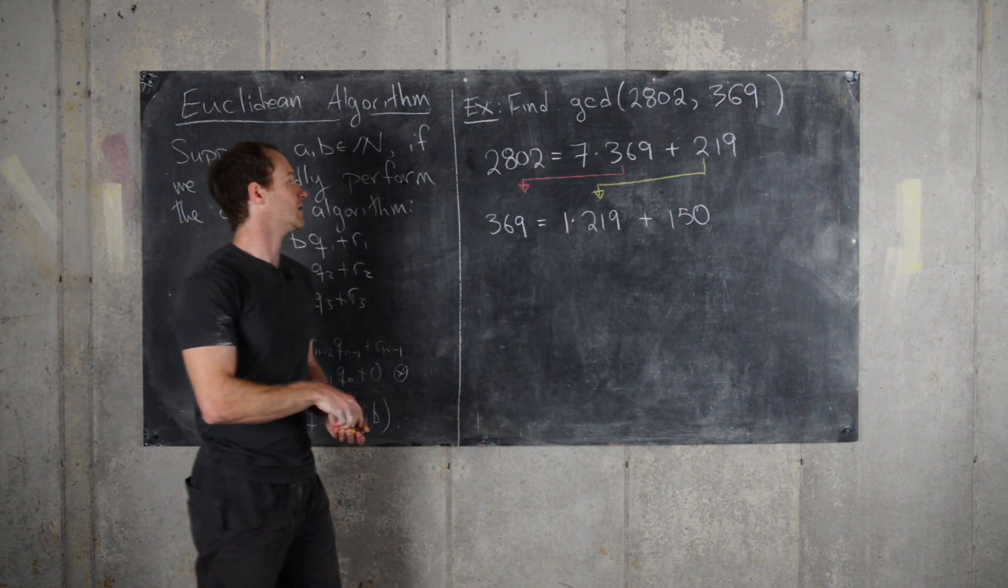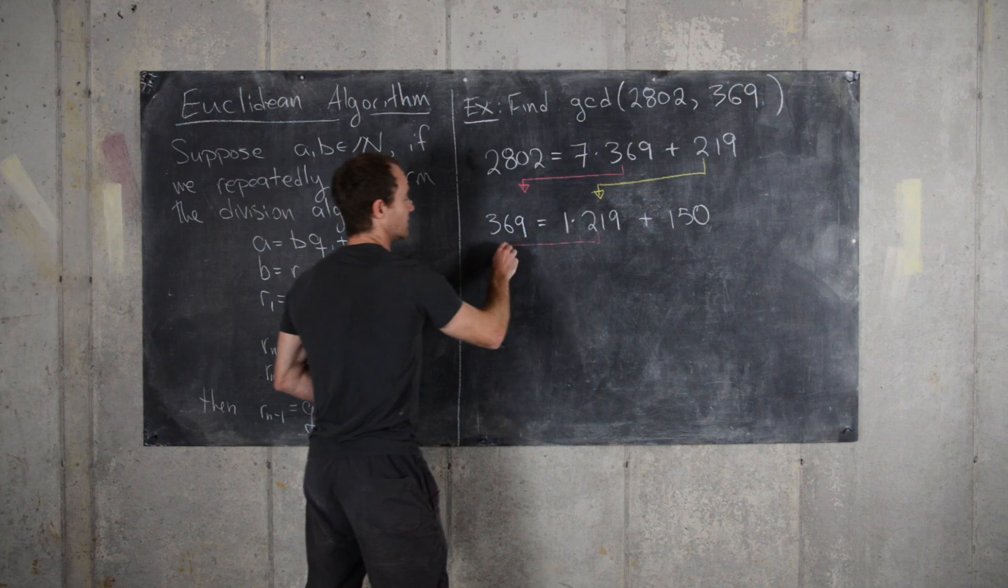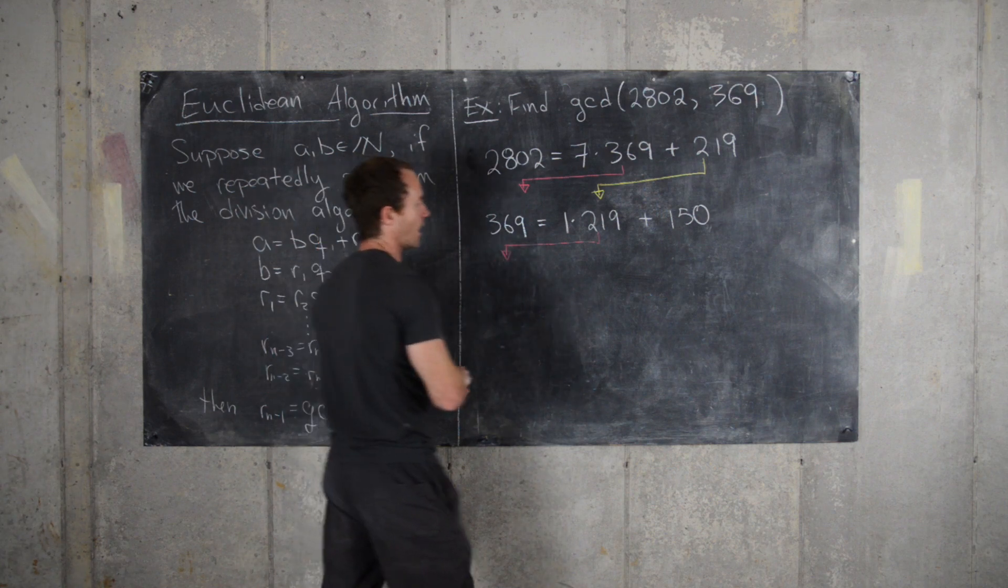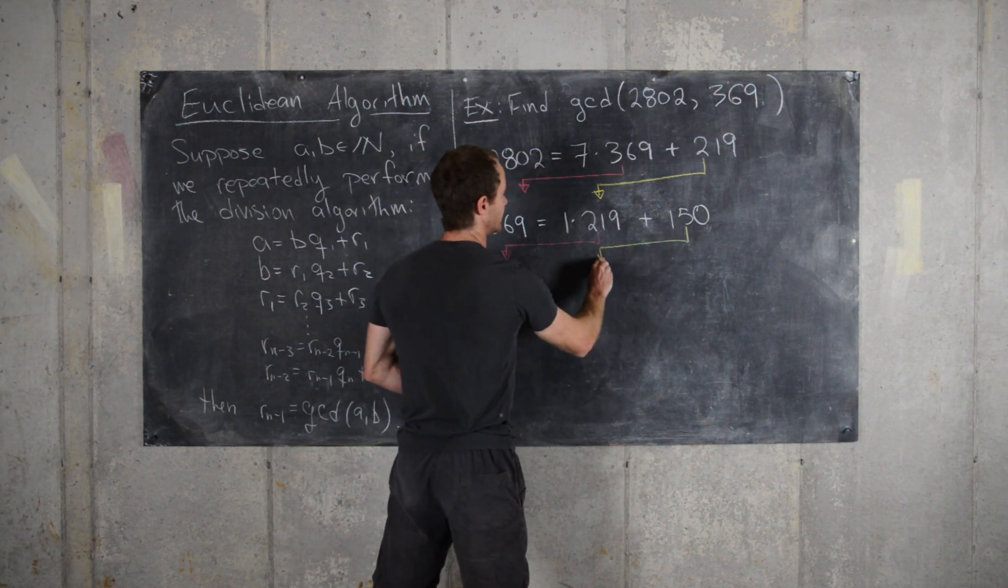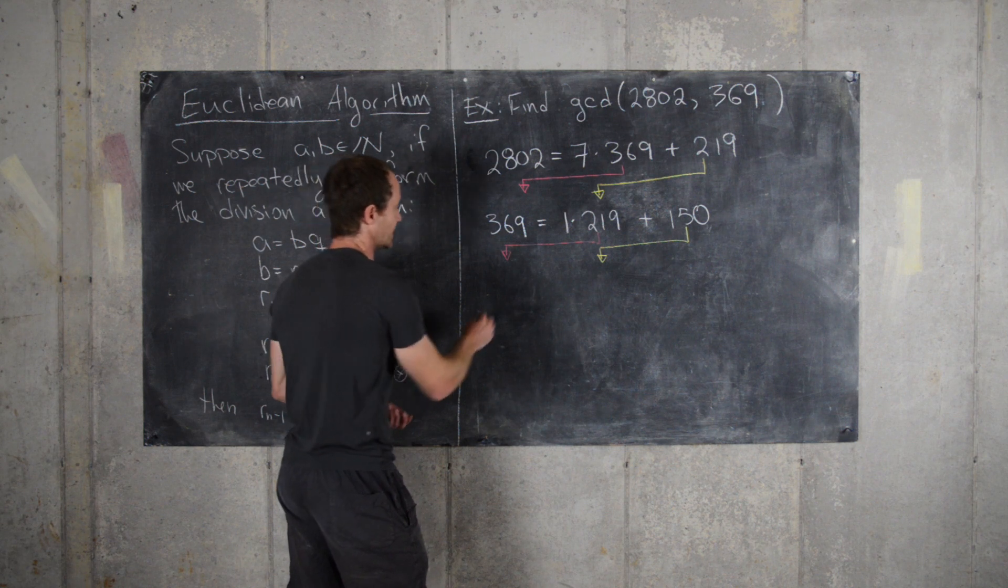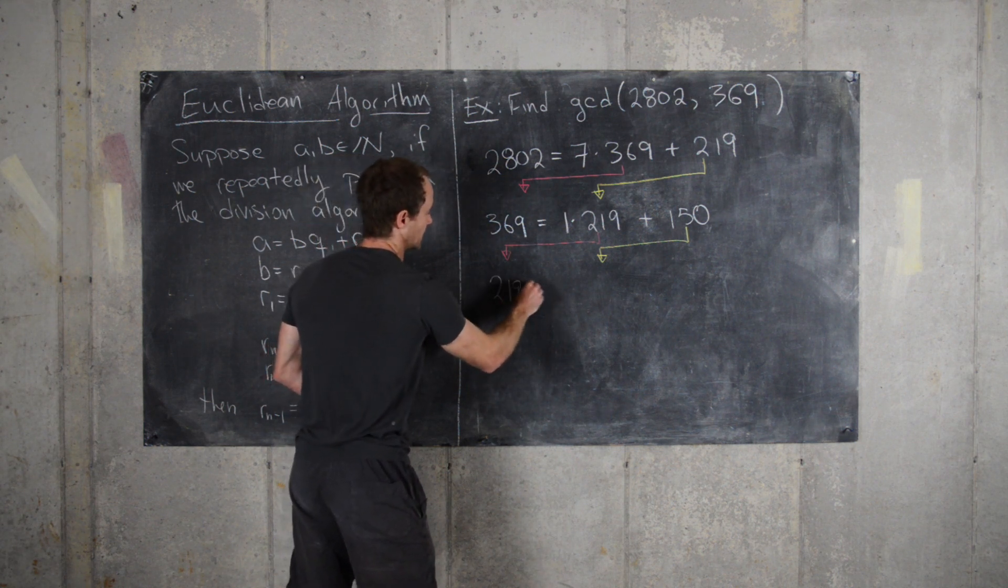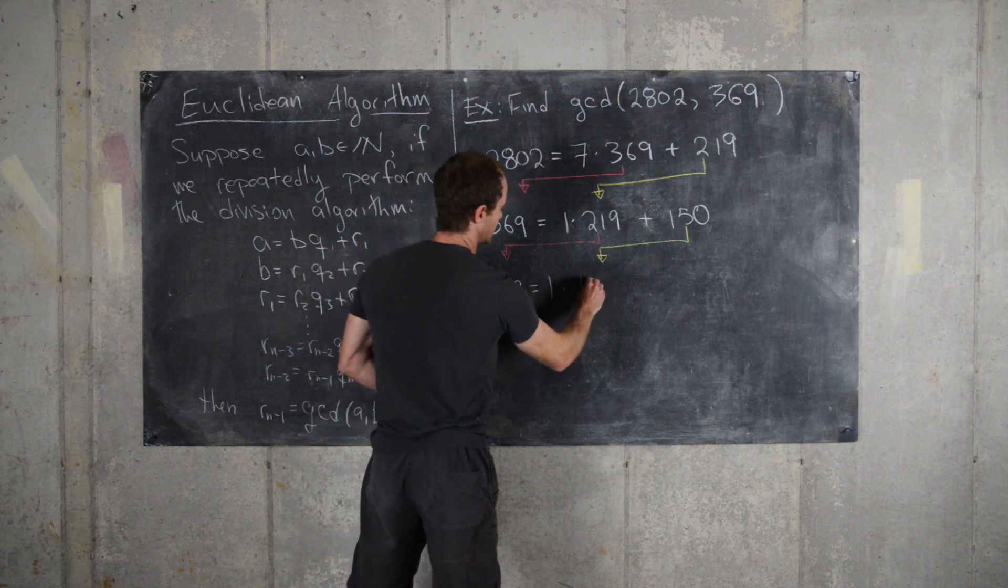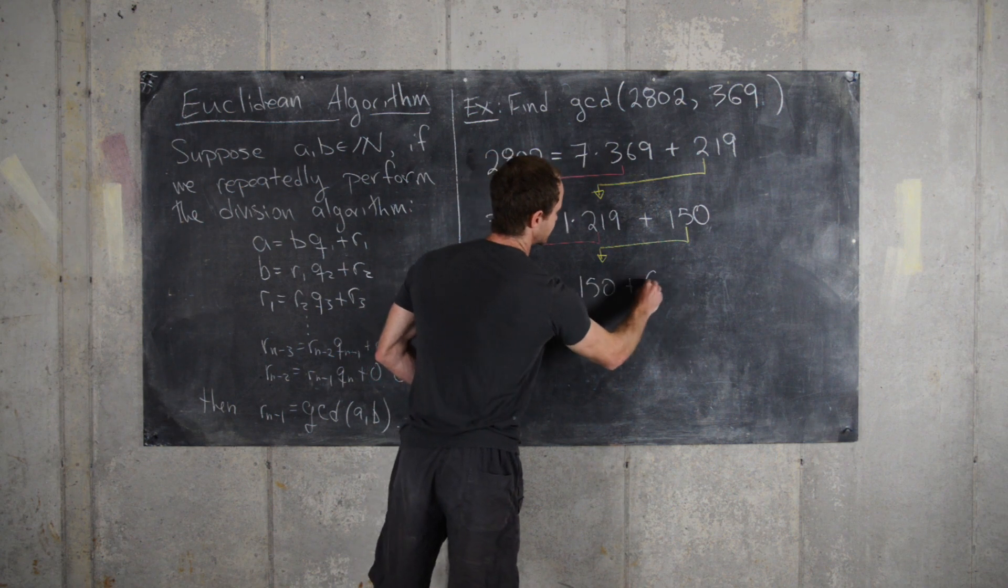And now we continue. So 219 will move down here and 150 will move down here. So we get 219 equals 1 times 150 plus 69.